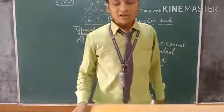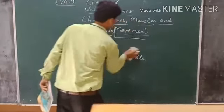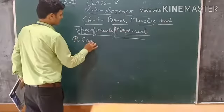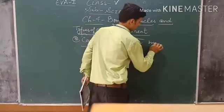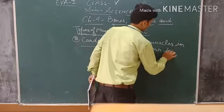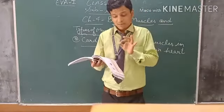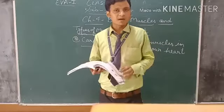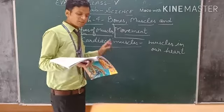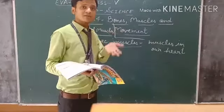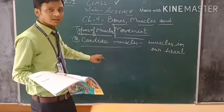The third type is cardiac muscles. The muscles in our heart are known as cardiac muscles. These muscles look like voluntary muscles but they are not voluntary. They work throughout our whole lives, pumping blood to the body.